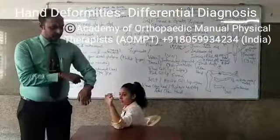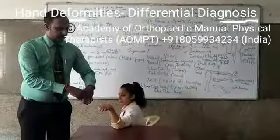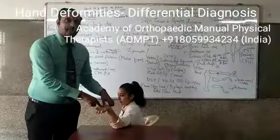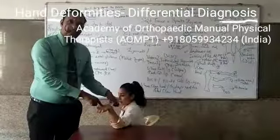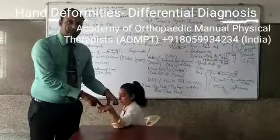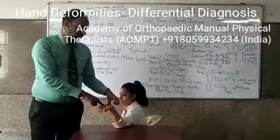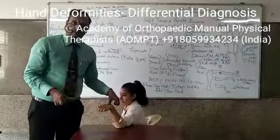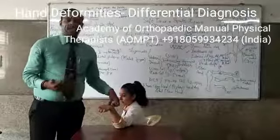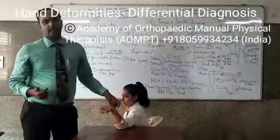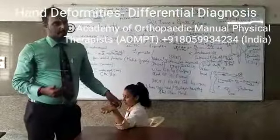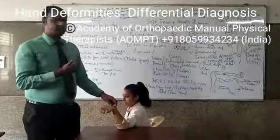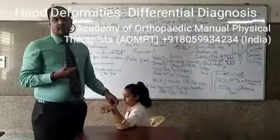Associated with wrist drop — wrist drop happens because of radial nerve palsy or injuries. So if all three nerves are affected, the condition is triple nerve palsy, seen in leprosy. Various conditions cause various deformities.